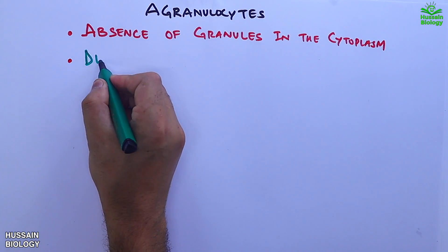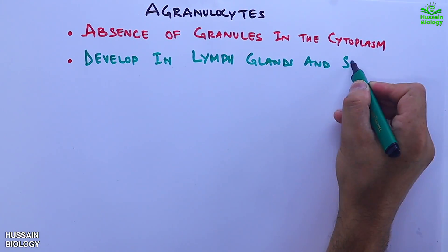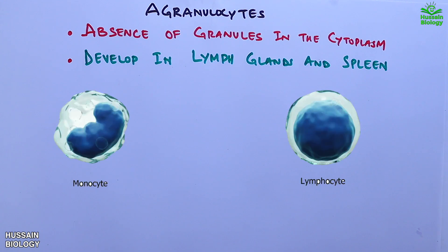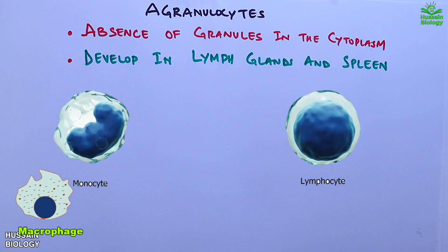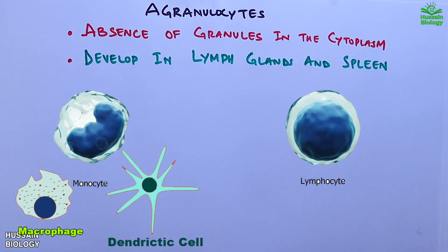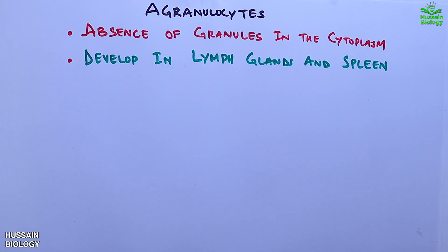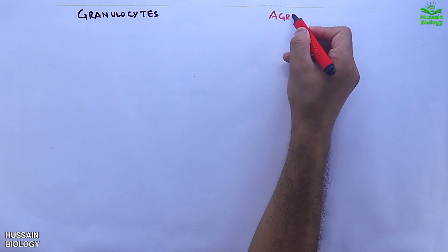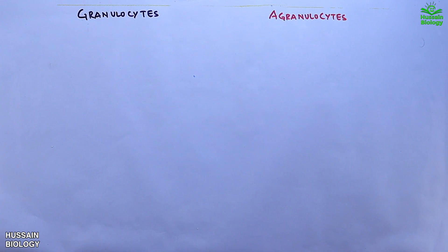Agranulocytes have an absence of granules in the cytoplasm and develop in lymph glands and spleen. There are two types: monocytes, which differentiate into macrophages or dendritic cells, and lymphocytes, which generate antibodies.